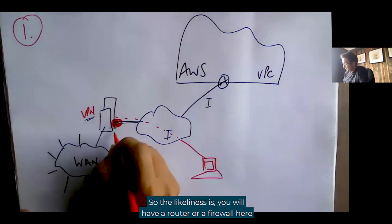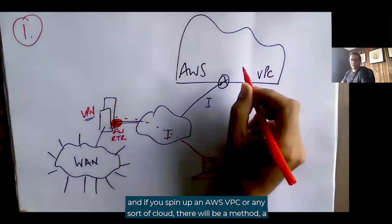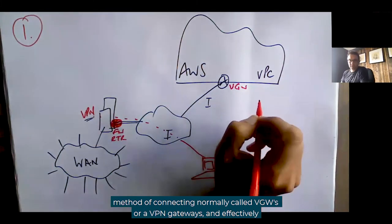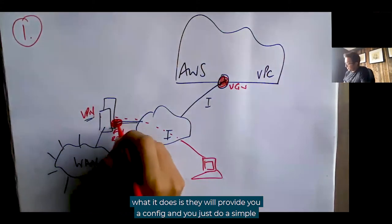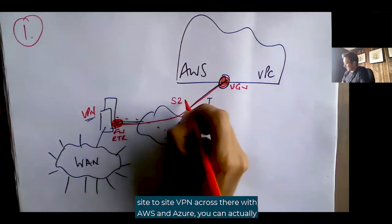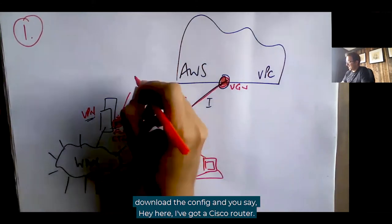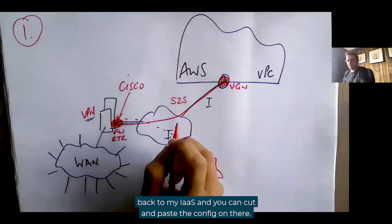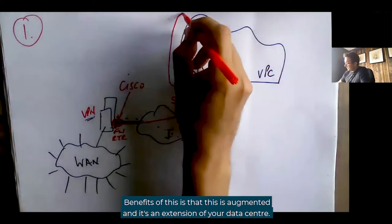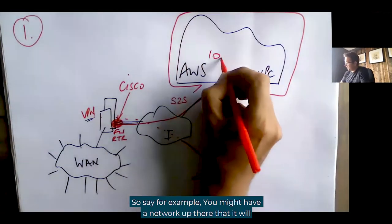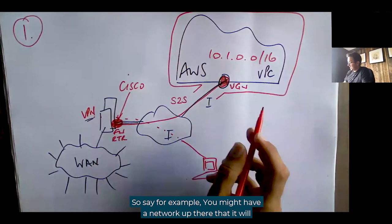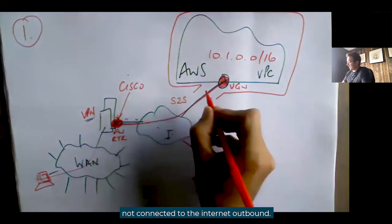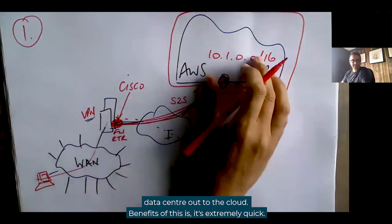You will have a router or a firewall here, and if you spin up an AWS VPC or any sort of cloud, there will be a method of connecting — normally called VGWs or VPN gateways. They will provide you a config and you just do a simple site-to-site VPN across there. With AWS and Azure you can actually download the config, specify your router type — say a Cisco router — and cut and paste the config on there. The benefit is this extends your data centre out to the cloud: it's fully routable from your WAN, not connected to the internet outbound, just extending your data centre into the cloud.